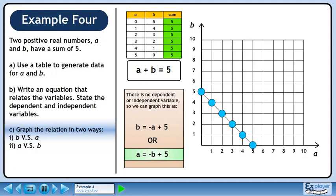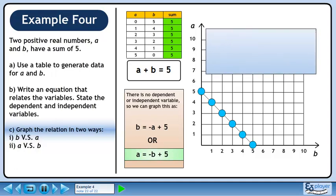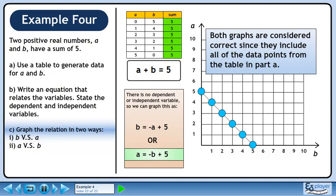Next, we'll graph A equals minus B plus 5. Swap the axis labels and re-plot the points. Both graphs are considered correct since they include all of the data points from the table in part A.